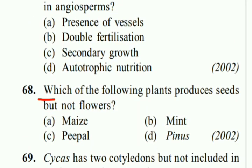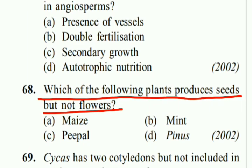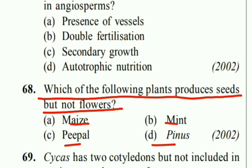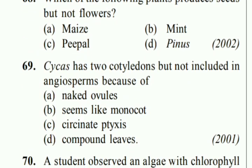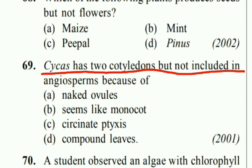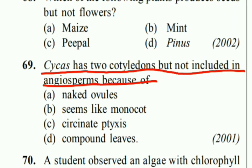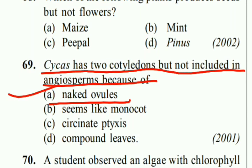Which of the following plants produce seeds but not flowers — Maize, Mint, Peepul, or Pinus? Right answer is Pinus. Cycas has two cotyledons but is not included in angiosperms because of naked ovules.